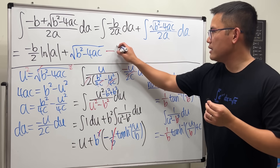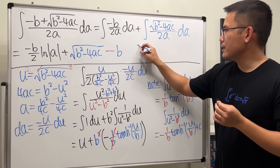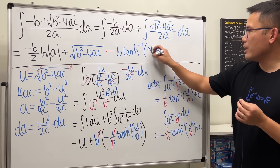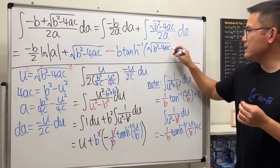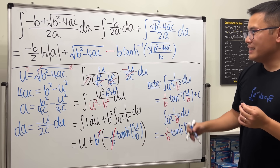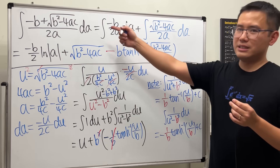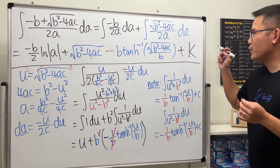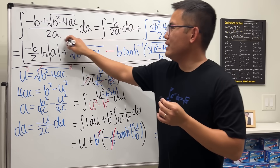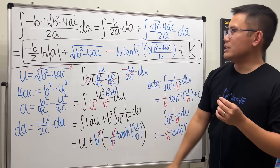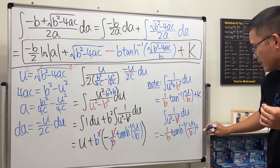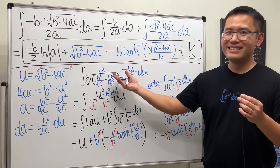Writing down the full result: integrating the quadratic formula with respect to a gives (−b/(2)) · ln|a| plus √(b² − 4ac) minus b · arctanh(√(b² − 4ac) / b), and then plus k for the constant of integration — using k instead of c since c is already a variable in the formula. And that's it!